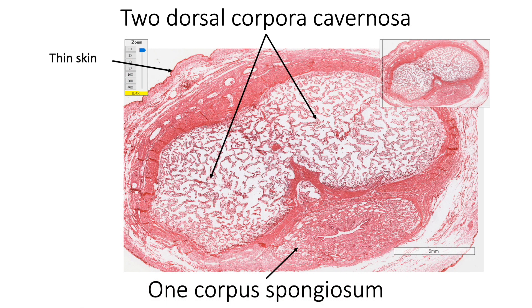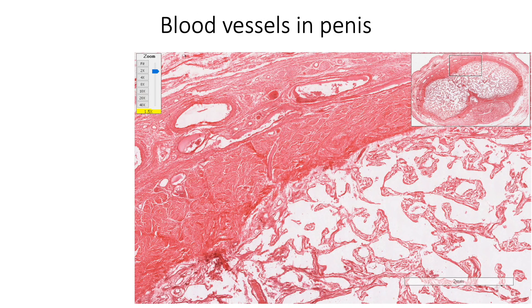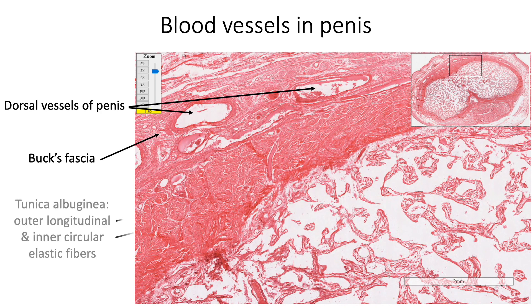Beneath the skin, the penis is covered by the dartos layer and Buck's fascia. The dartos layer is a loose connective tissue layer devoid of fat, containing few smooth muscle fibers which are extensions of the dartos muscle. Buck's fascia is the deep fascia of the penis, made up of dense connective tissue. Buck's fascia blends with tunica albuginea that covers all three erectile bodies; tunica albuginea is made up of outer longitudinal and inner circular layers of elastic fibers. Buck's fascia contains the dorsal vessels of the penis, and tunica albuginea contains the deep vessels of the penis.